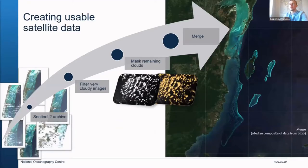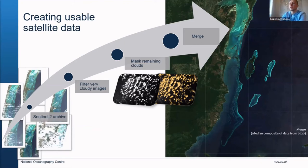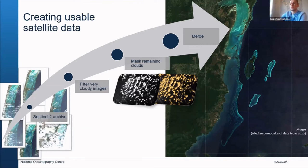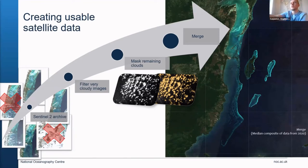As we noticed, there were quite a few images with lots of cloud, and this can be a real pain if you're just trying to use some satellite data within a certain time period. To create some usable satellite data that we can map, we can go through a stream where we gather the archive, instantly remove images with lots of cloud in them, mask the existing cloud in all available images, and then merge them together through a median composite.